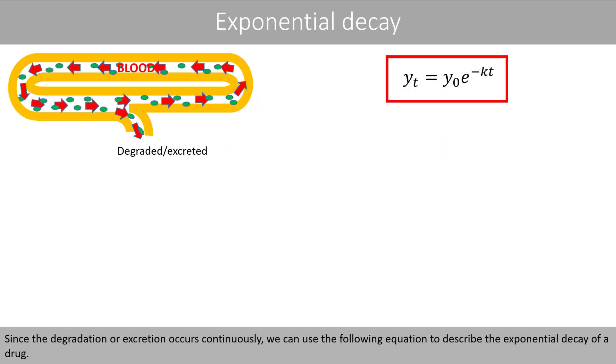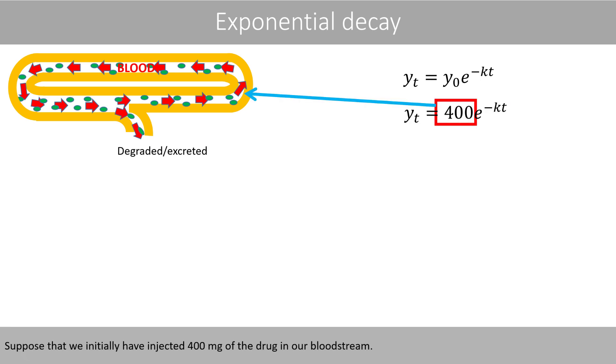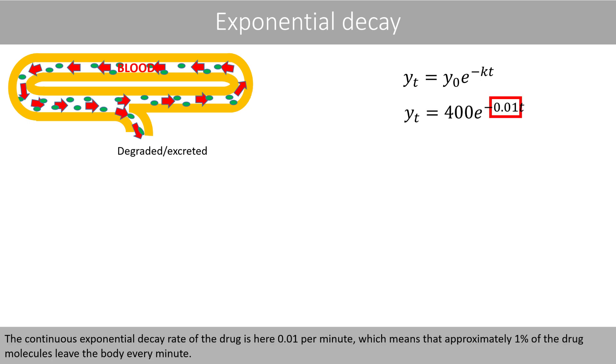Since the degradation or excretion occurs continuously, we can use the following equation to describe exponential decay of a drug. Suppose that we initially have injected 400 mg of the drug in our bloodstream. The continuous exponential decay rate of the drug is here 0.01 per minute, which means that approximately 1% of the molecules leave the body every minute.